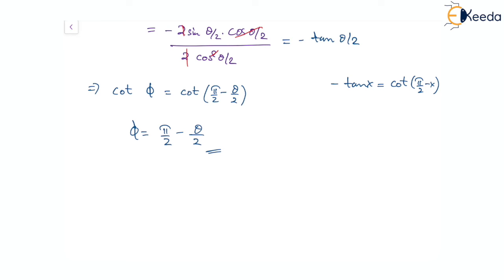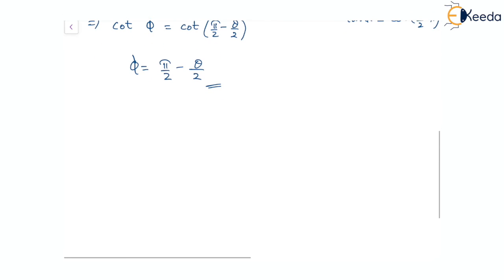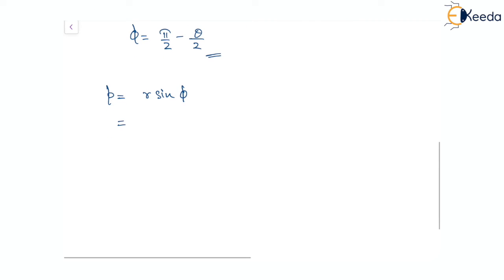Since we know that the perpendicular distance of the tangent to the curve from the pole is given by the relation p equal to r sin phi, with phi equal to pi by two minus theta by two, this becomes p equal to r sin of pi by two minus theta by two, which equals r cos(θ/2).